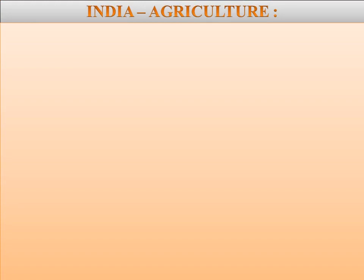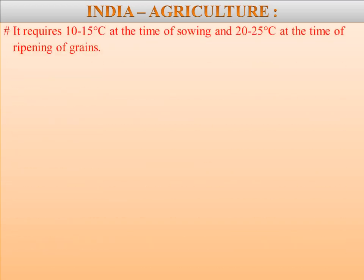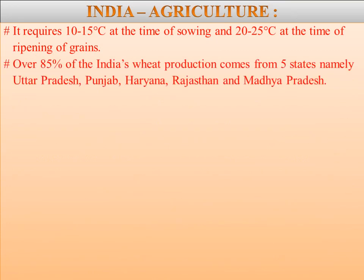Wheat requires 10 to 15 degrees centigrade at the time of sowing and 20 to 25 degrees centigrade at the time of ripening of grains. Over 80 percent of India's wheat production comes from five states: Uttar Pradesh, Punjab, Haryana, Rajasthan, and Madhya Pradesh. Apart from these, the black soil tract of the Deccan covering parts of Maharashtra and Gujarat also contributes major wheat production.